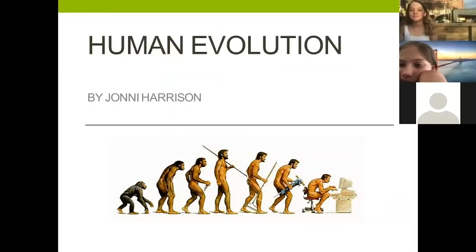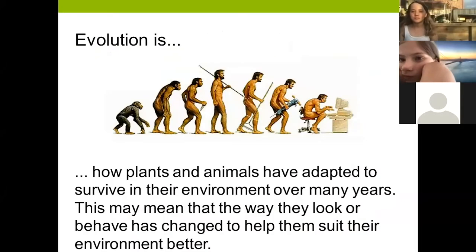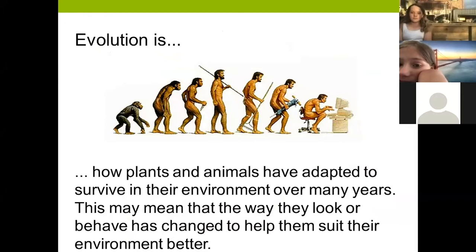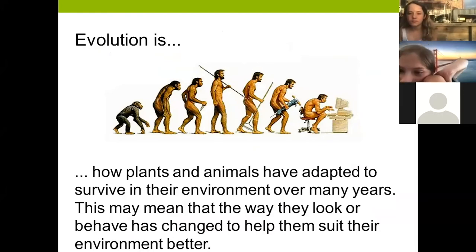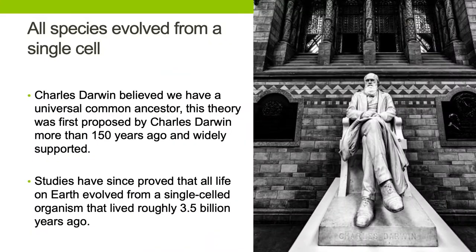Human evolution - evolution is how plants and animals have adapted to survive in their environment over many years. This may mean that the way they look or behave has changed to help them suit their environment better. Charles Darwin believed